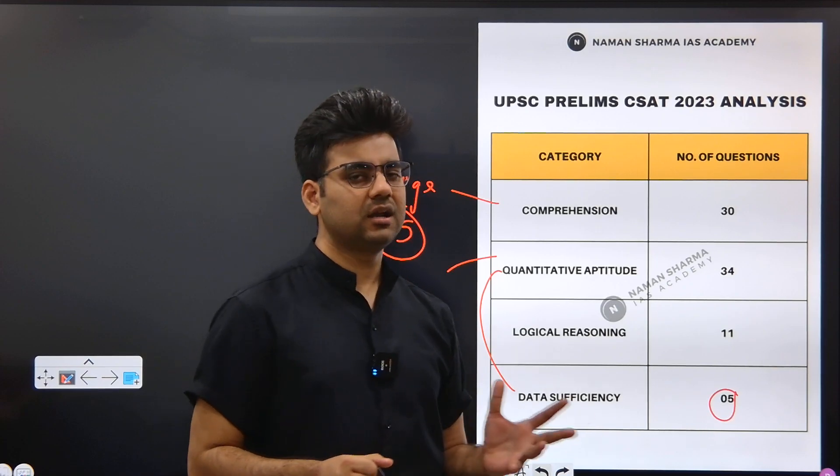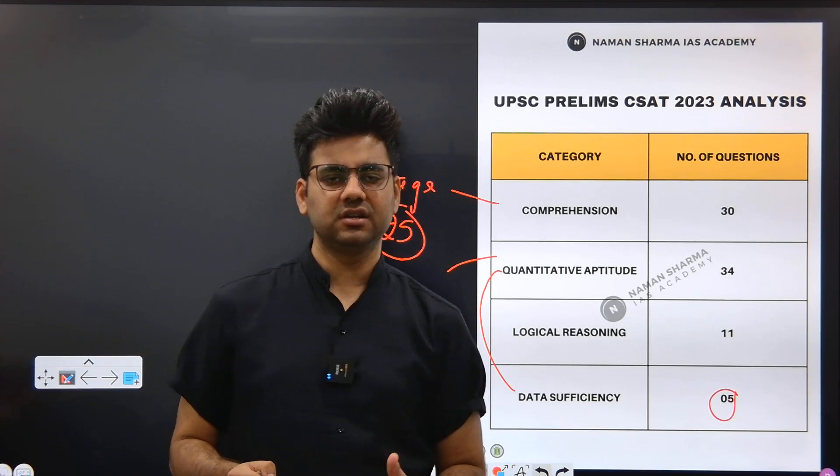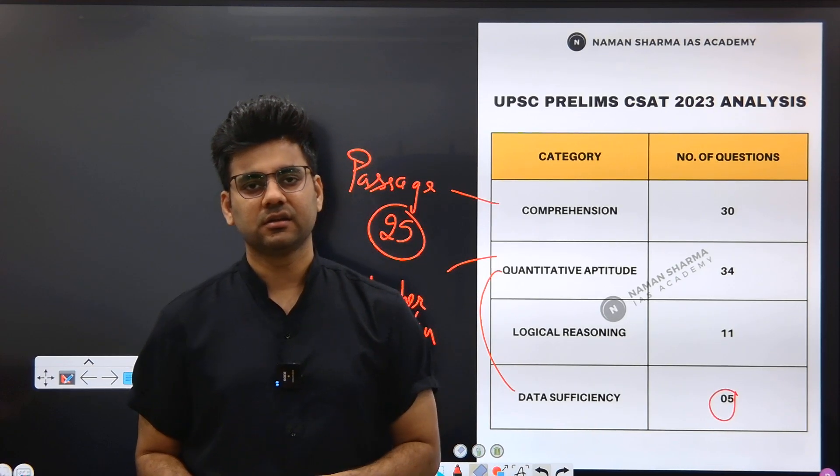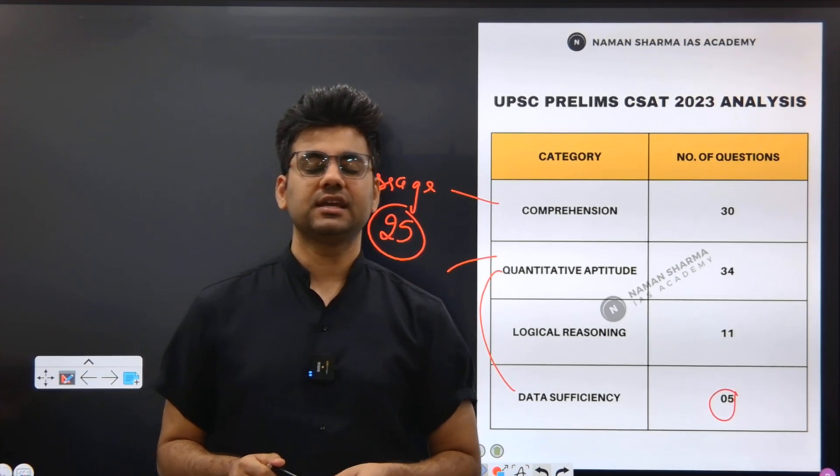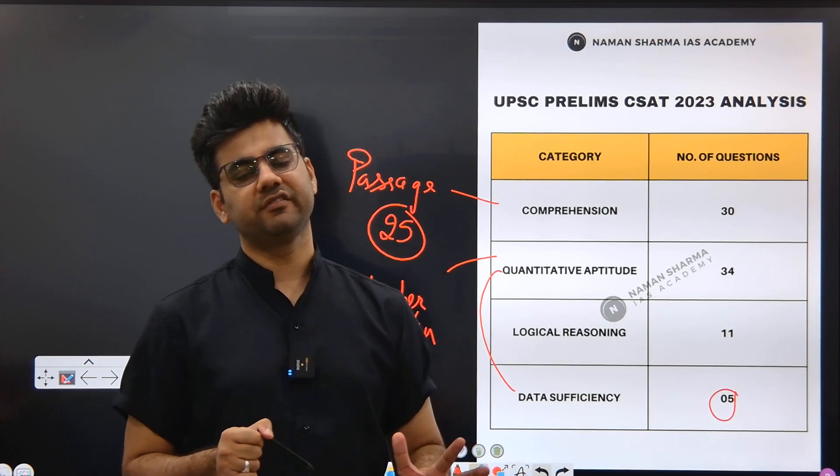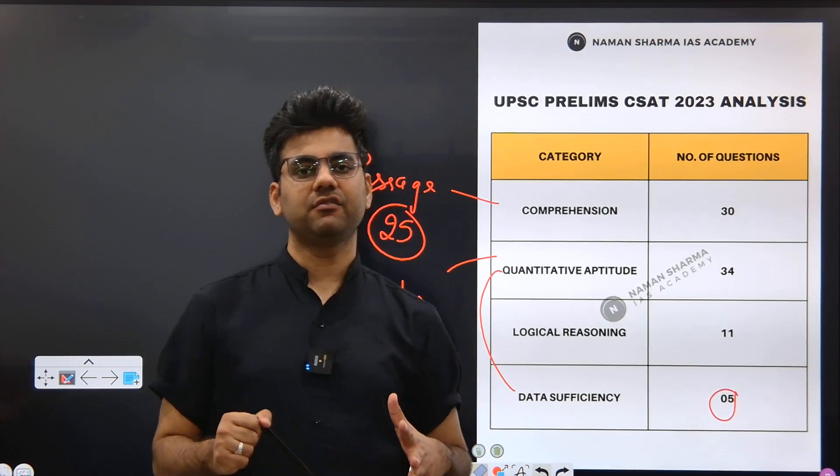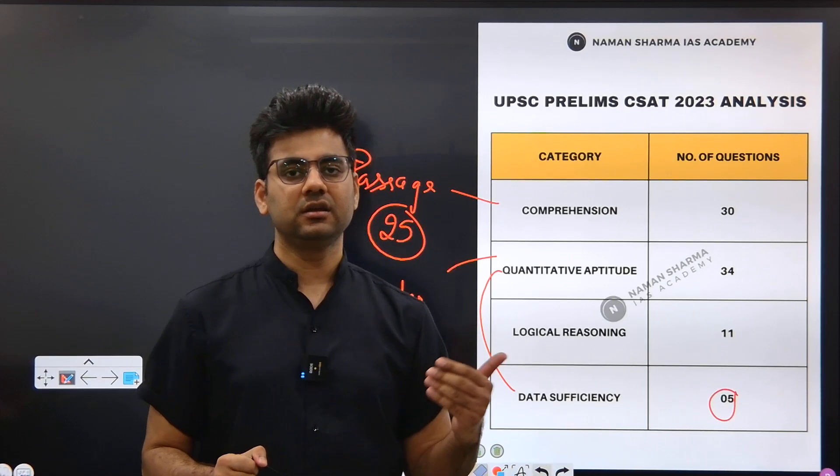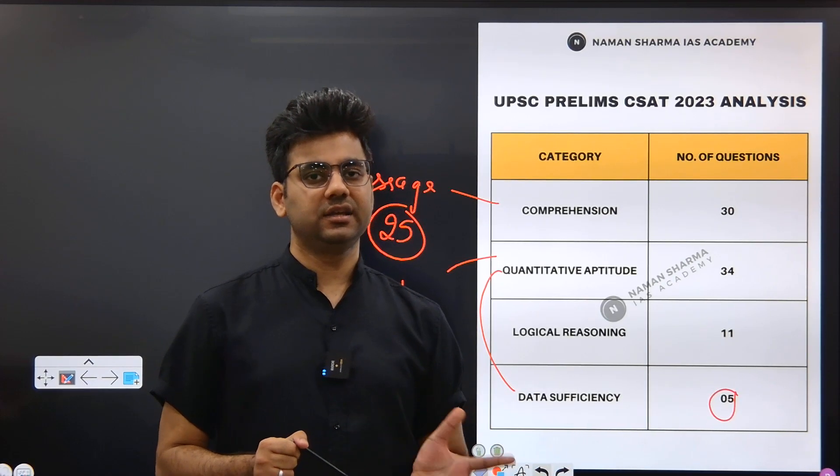Overall agar hum dekhte hain, agar aapne 46 to 50 ke around questions agar solve kiye hain, is bracket mein aap aate hain, toh CSAT will be easier. Ek baat dhyan rakhne ki zaruri hai ki UPSC har saal CSAT ko difficult karta ja raha hai. So we have to start focusing on the CSAT as well, equally just like we put equal effort in other subjects.